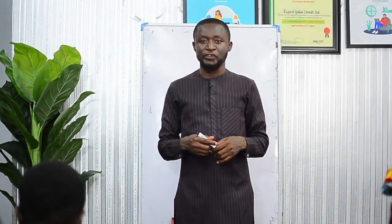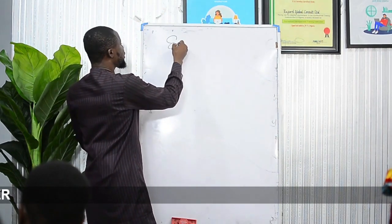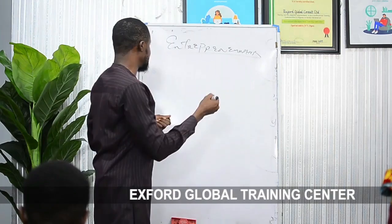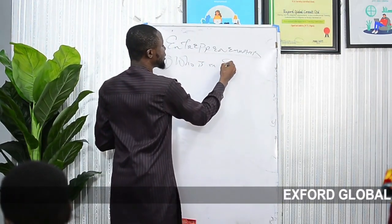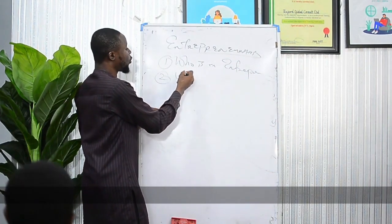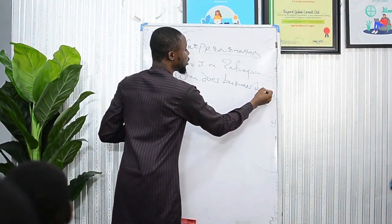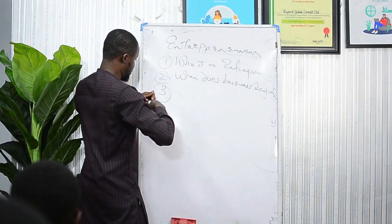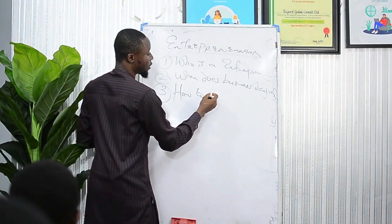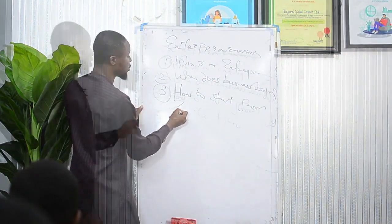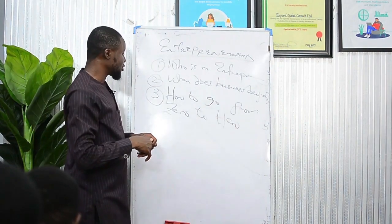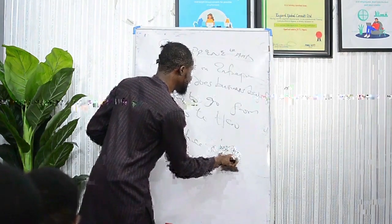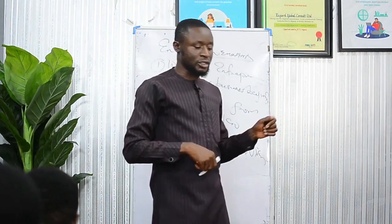Next, we are looking at entrepreneurship rejuvenation. We are going to give you a course outline under entrepreneurship rejuvenation. The first thing is: who is an entrepreneur? The second is when does business begin? Number three is how to start from zero to hero. And the fourth one is the importance of having a vision. These are the four things we discuss under entrepreneurship rejuvenation.